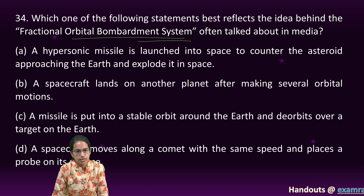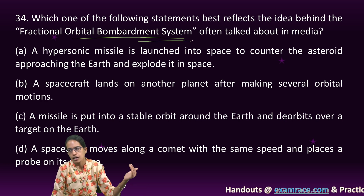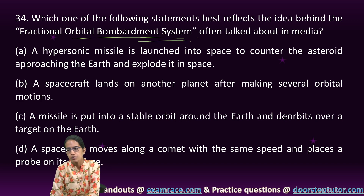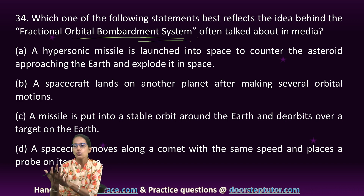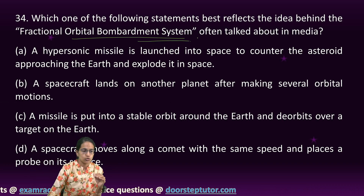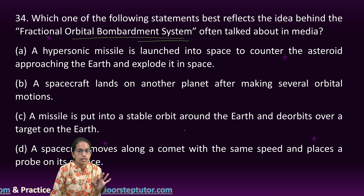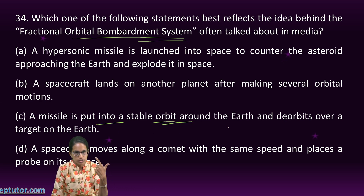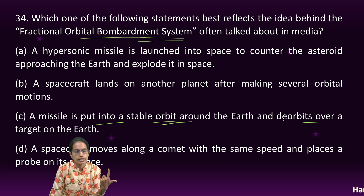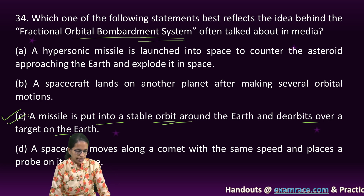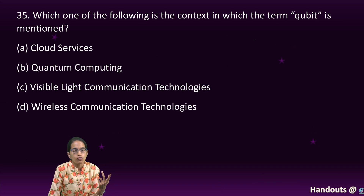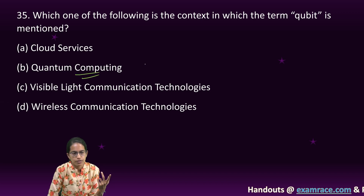The next question covers the Fractional Orbital Bombardment System (FOBS). Under this system, a missile or warhead delivery system is placed in low Earth orbit toward the target destination. It is a missile put into a stable low Earth orbit around the Earth, and it de-orbits over the target on Earth. So C is the right option for this question.